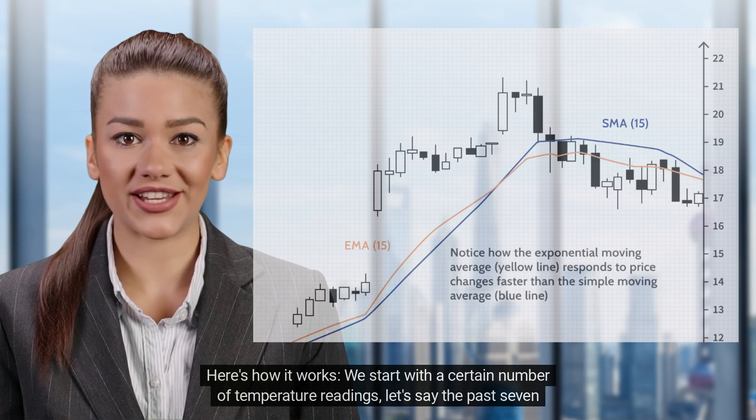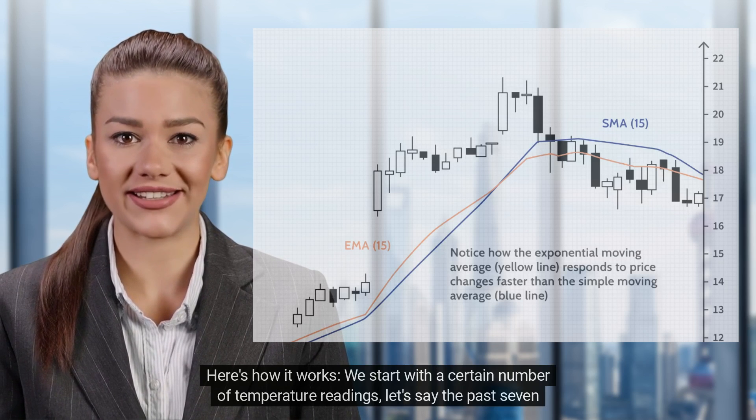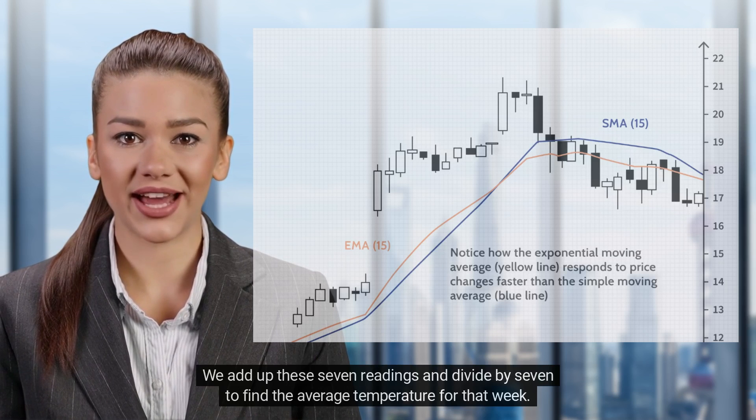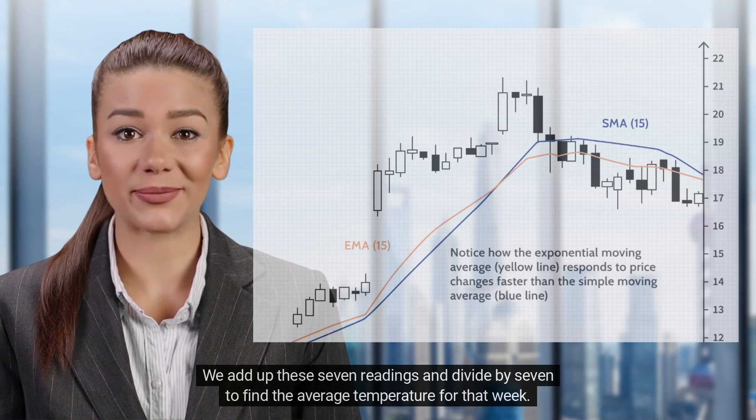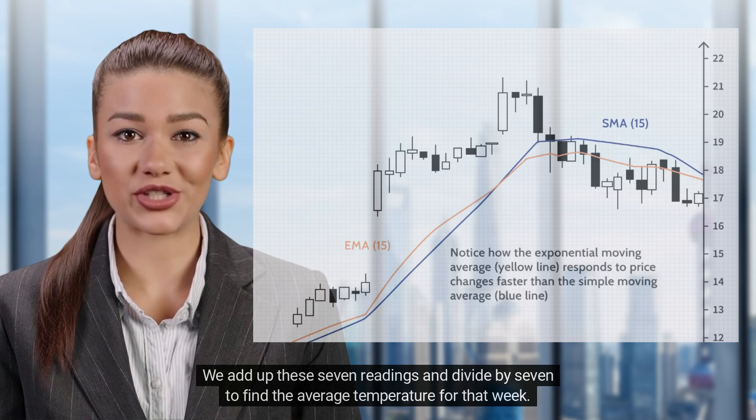Here's how it works. We start with a certain number of temperature readings, let's say the past 7 days. We add up these 7 readings and divide by 7 to find the average temperature for that week.